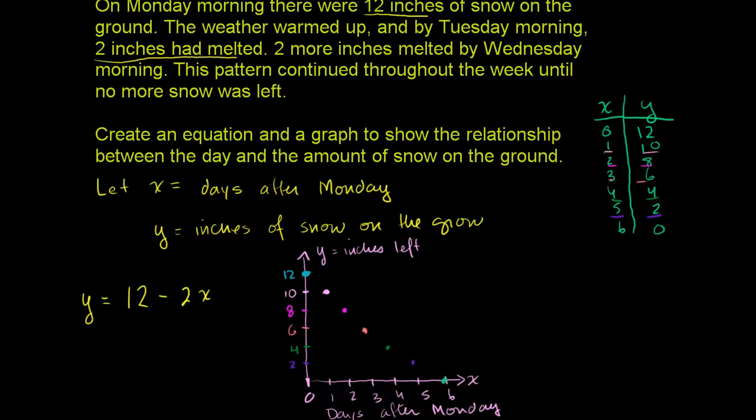And you can see that there's this line that formed, because this is a linear relationship. It looks a little curvy because I didn't draw it perfectly, but that is a line. So we've done everything. We've created the equation: we start with 12 inches, every day after that we lose 2 inches, and we showed a graph that depicts the relationship.